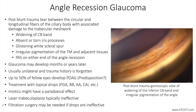On the management side, angle recession glaucoma is treated with topical IOP-lowering medications, and all classes of medications may be used except miotics like pilocarpine, which may exacerbate angle recession in the early stages post-trauma. Steroids may be used to decrease cell and flare, and atropine may be used to enhance comfort.